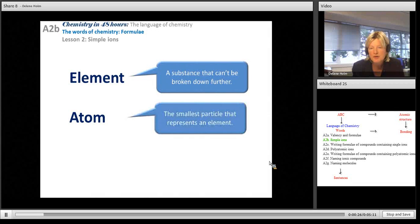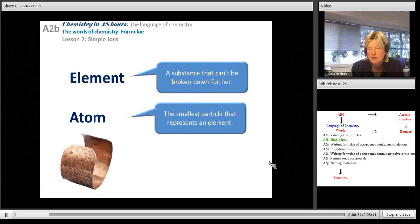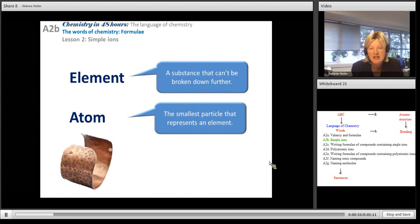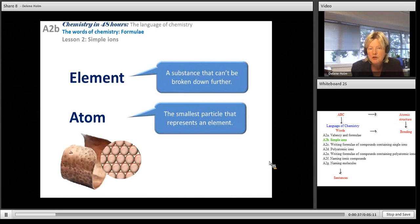An atom is the smallest particle that represents an element. So if I had a copper bracelet and I could zoom in with a microscope about 100 trillion times, you would be able to see these small little particles called atoms.